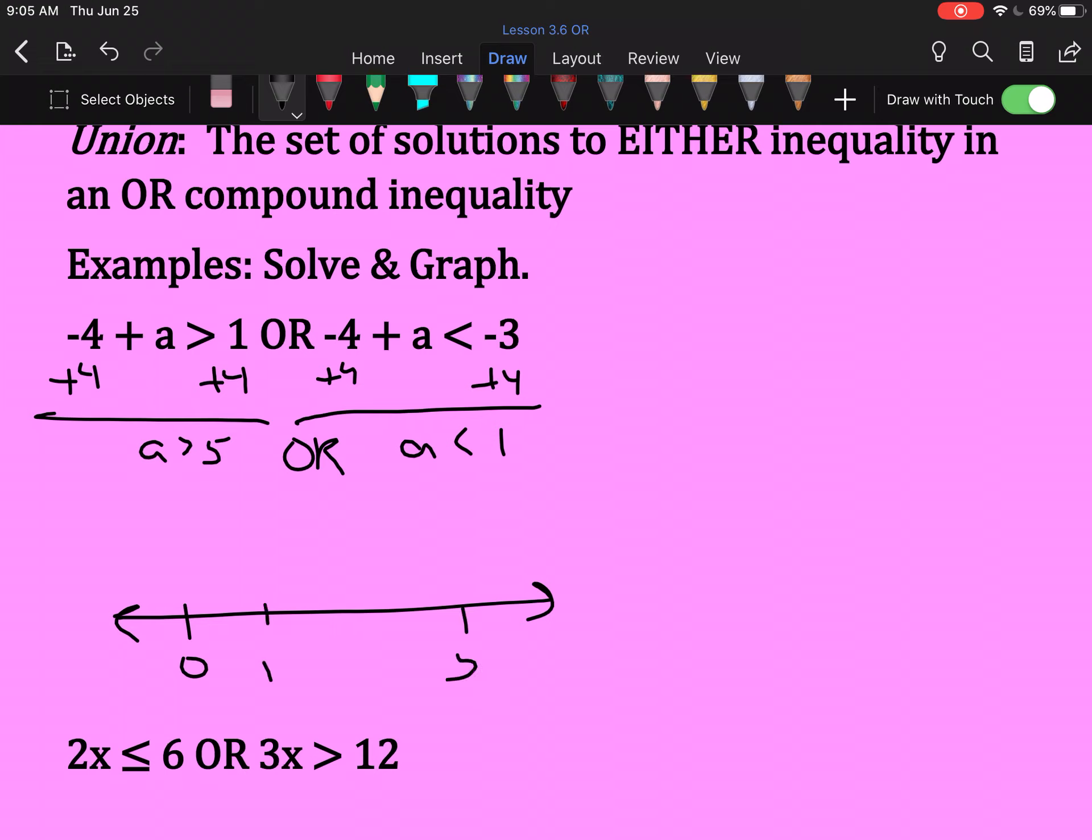So put down our number line. Put all the things we need on it, which is 0, and then the two numbers, 1 and 5. Greater than 5 we know looks like that. Less than 1 we know looks like that. And the OR inequality looks like what I've just drawn. It's just two inequalities drawn on the exact same number line. That's it.